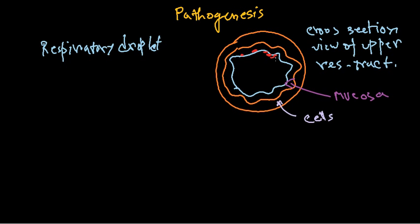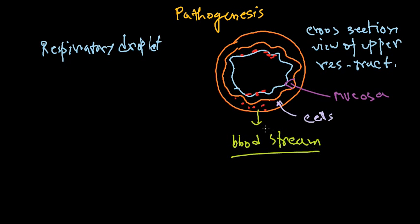This bacteria usually colonizes in the mucosa — they adhere to the mucosa and start infecting the cells. As they infect, they destroy the mucosa, reach the cells, and finally reach the bloodstream. Once in the bloodstream, the infection can spread from one place to another.